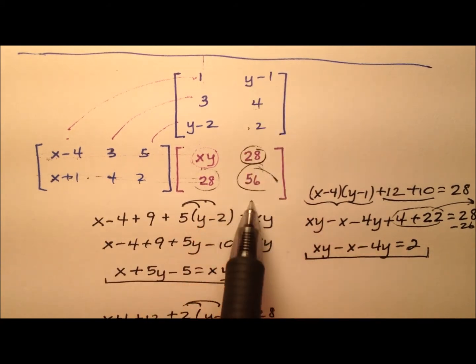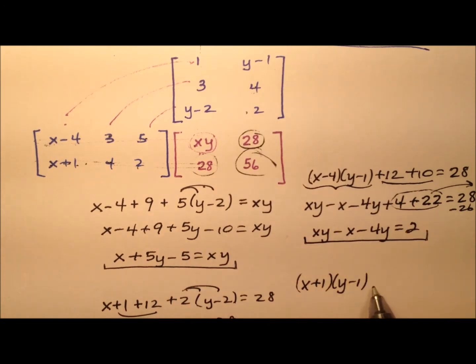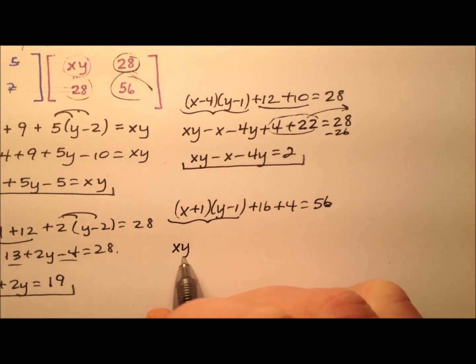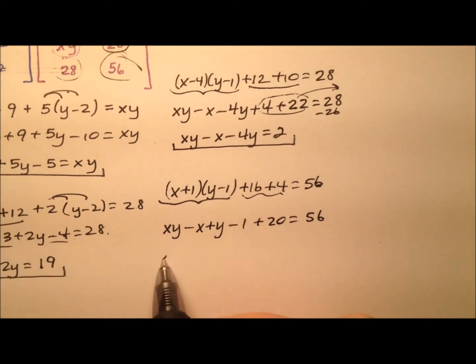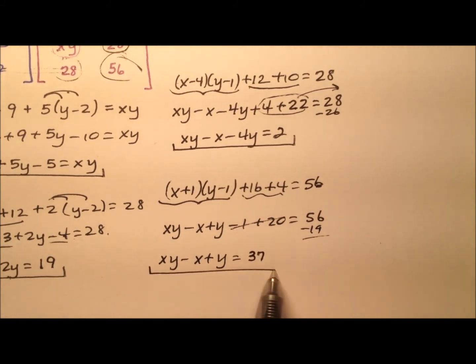So coming across this row and down this column. So (x+1) times (y-1), we'll put that right down there. And then 4 times 4 is 16, and 2 times 2 is 4, and that equals 56. So doing this binomial multiplication, we'll be left with xy-x+y-1+20 equals 56, and again that 20 was just from the 16 and the 4. So xy-x+y, so -1+20 is 19, and this will be a -19, so it looks like equals 37.